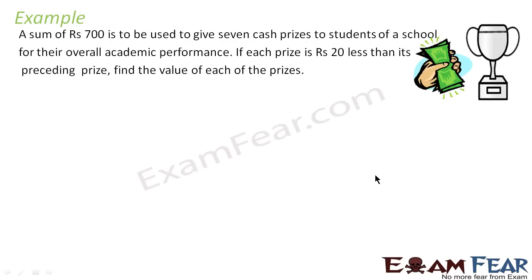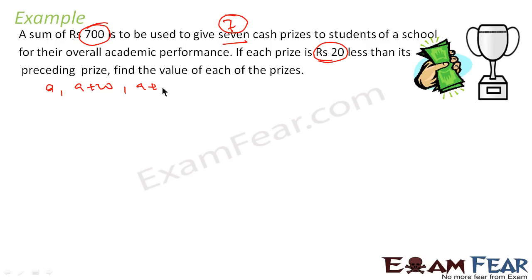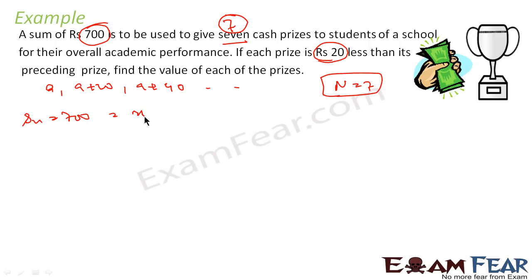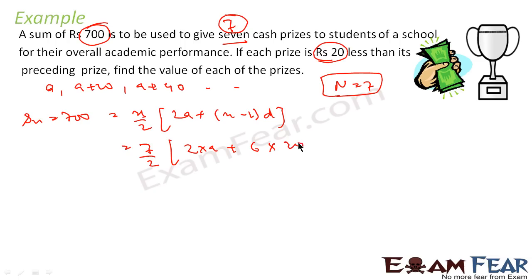Let us take one more example. A sum of 700 rupees is to be used to give 7 cash prizes to students at a school. If each prize is 20 rupees less than the preceding prize, find the prizes. We let the first prize be A; then the prizes are A, A+20, A+40 and so on. N=7 and the total sum S_7 = 700.